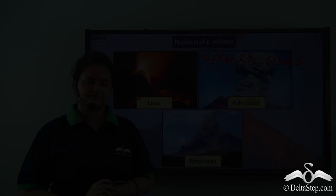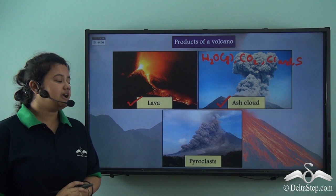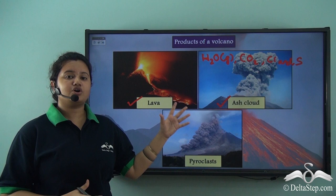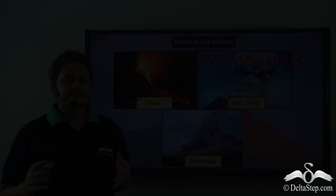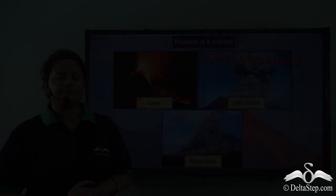Now these gases are hazardous and can lead to climate change. Now apart from these two we can also find fragmented pieces of rocks mixed with hot gases coming out of a volcano. And this is known as pyroclast. Now pyroclasts are generally found when the vent or the opening of a volcano collapses and fragments of rocks and hot gases run down the slope of a volcano. Thus these are the different products of a volcano.